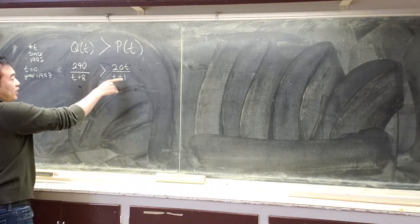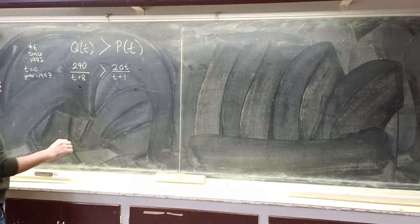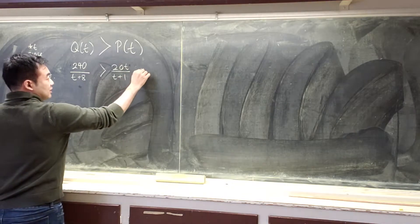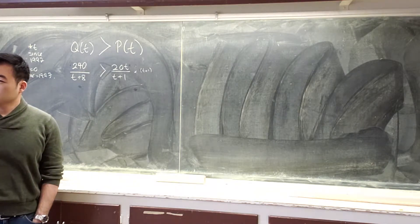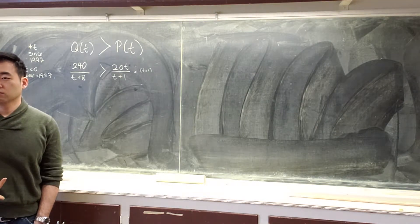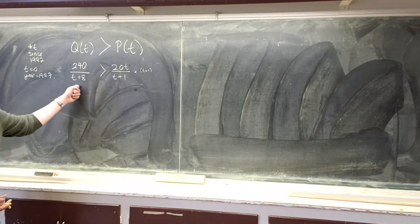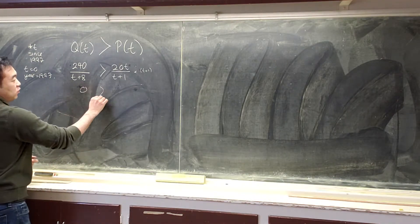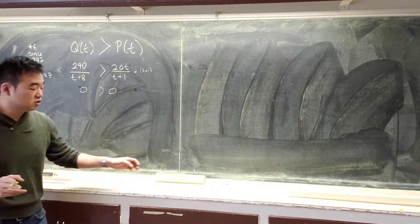Some people might have thought: okay, I don't like the denominator, I'm going to multiply the denominator out. That's fine normally. However, if I were to multiply both sides by, let's say, t plus 1, you're at risk of multiplying by zero. So what if t is equal to negative 1? And if you multiply by zero, you get 0 is greater than 0. That's dangerous, so you may not want to do that.